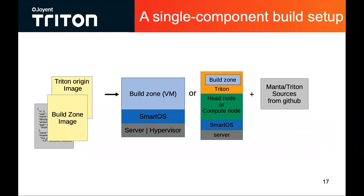Effectively, that's the build environment for a single component. Take a build zone image, instantiate it as a VM, install it on a Triton or SmartOS system, and pull down the GitHub sources for either Manta or Triton. All of our sources are on GitHub, so you can build the entire system from absolute scratch, including SmartOS itself from all of those sources. You can also assemble a full image, produce an ISO image or a USB image that you can write to a USB key and bring up a full Triton instance using those sources.